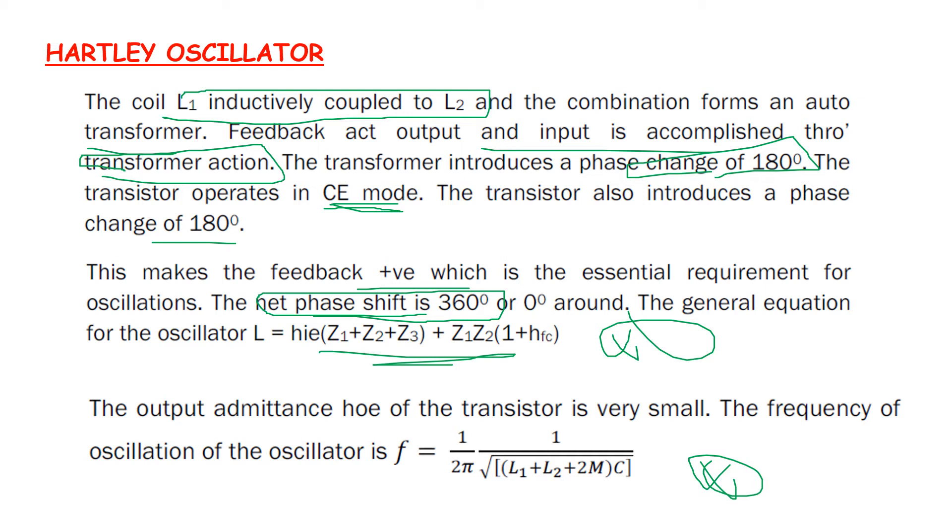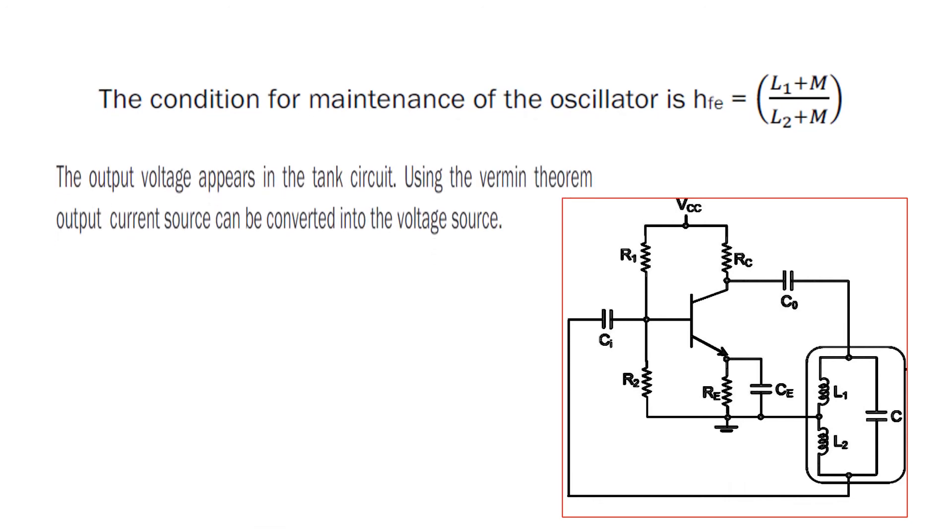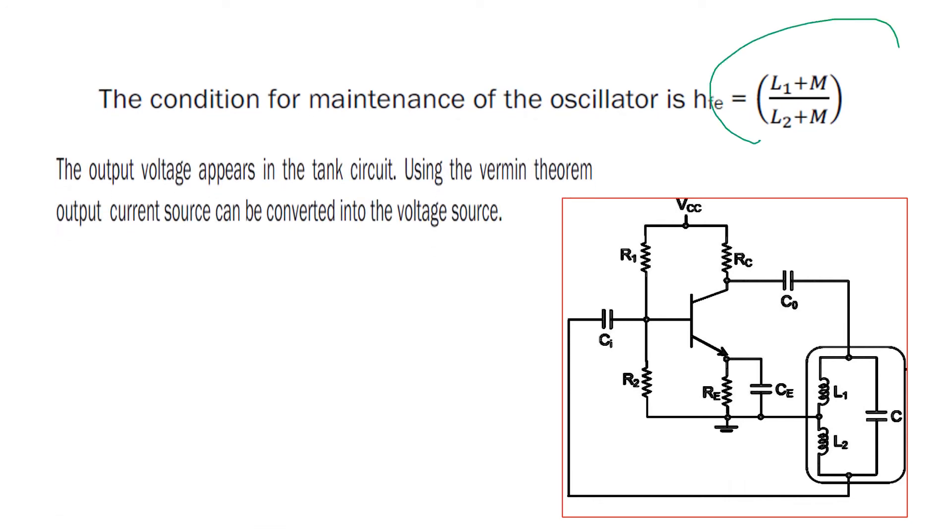Next, the condition for maintenance of the oscillator: the condition is hfe = (L1 + M) / (L2 + M). In Colpitts it's C1/C2, while in Hartley it's L1/L2.